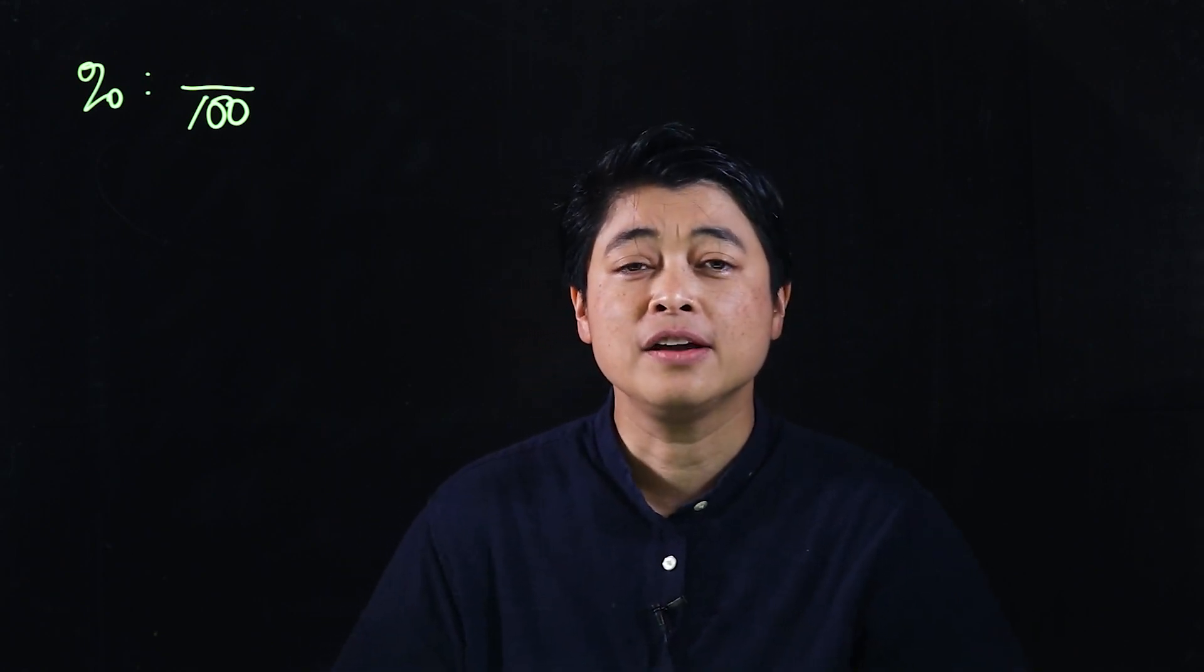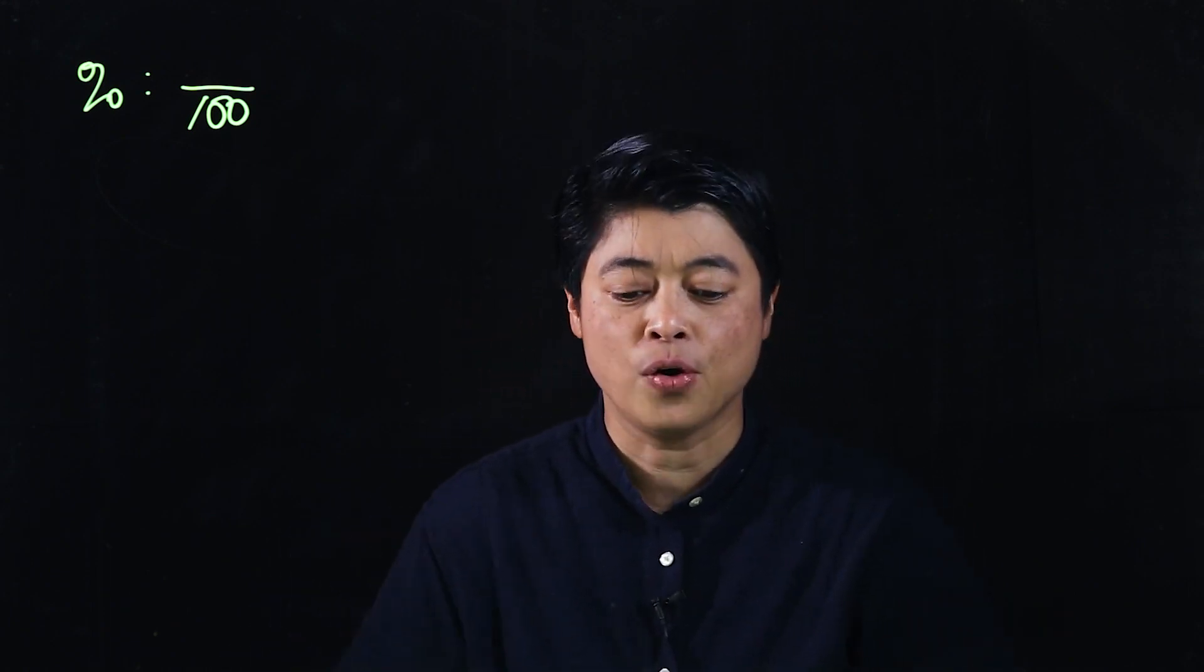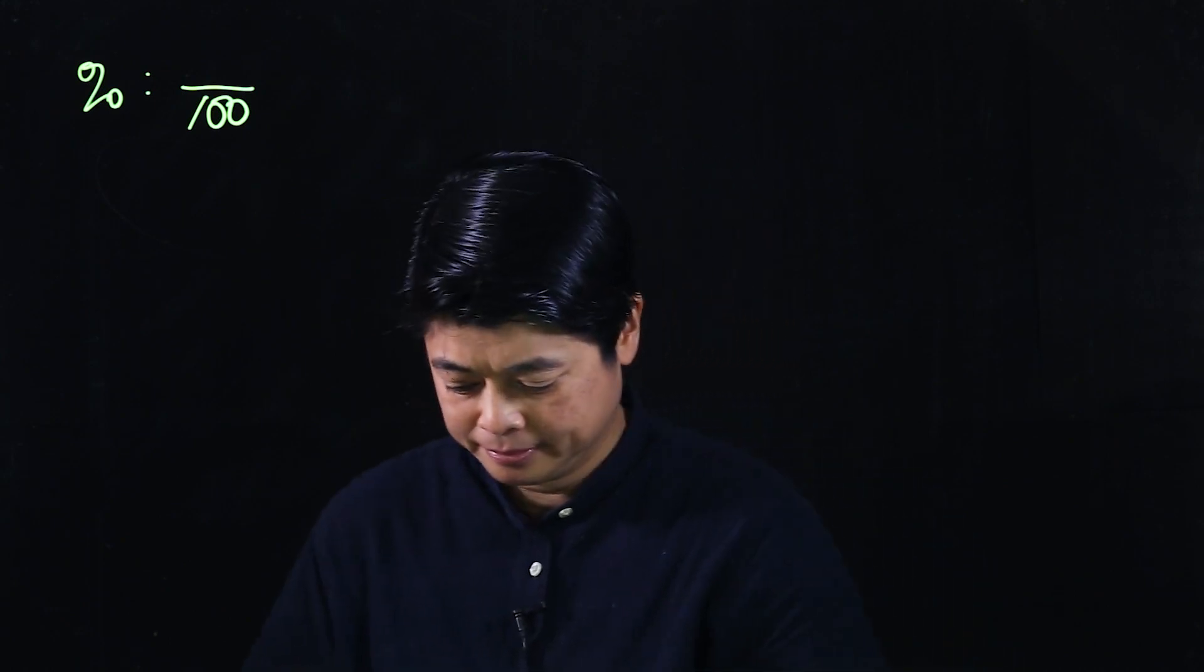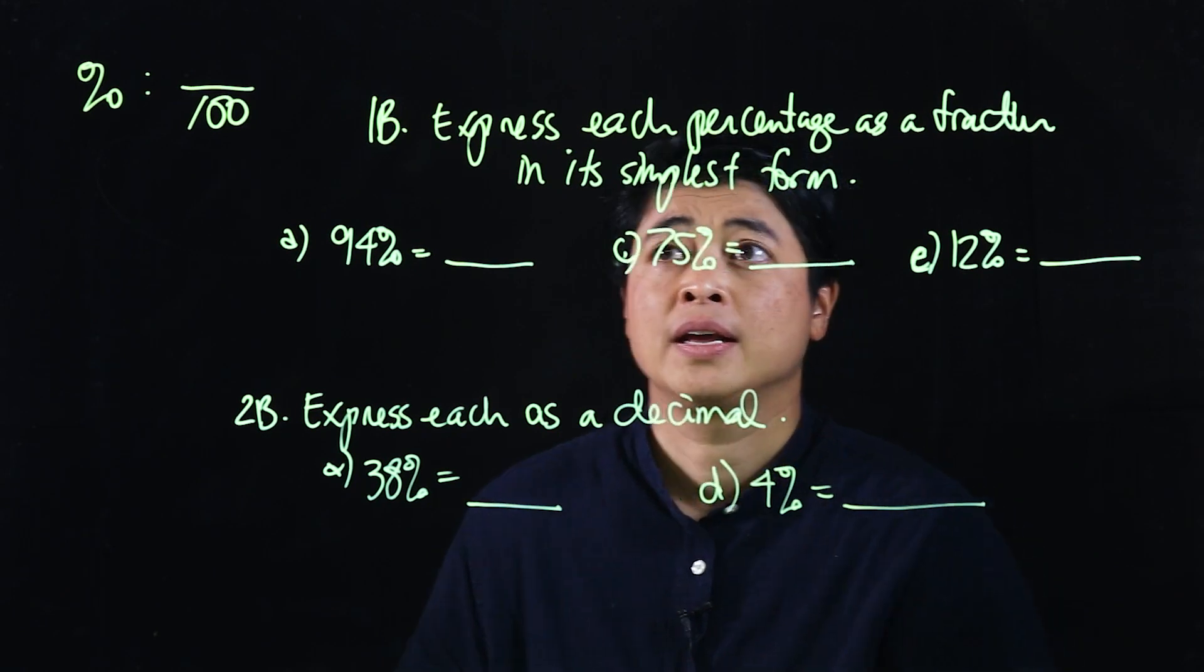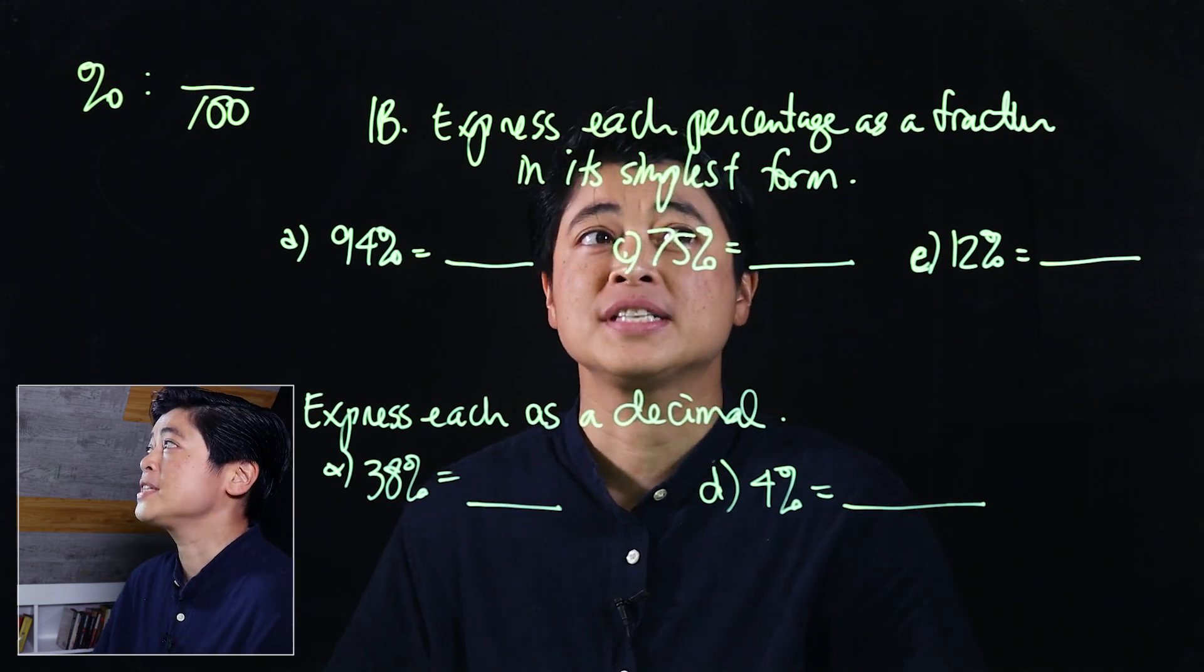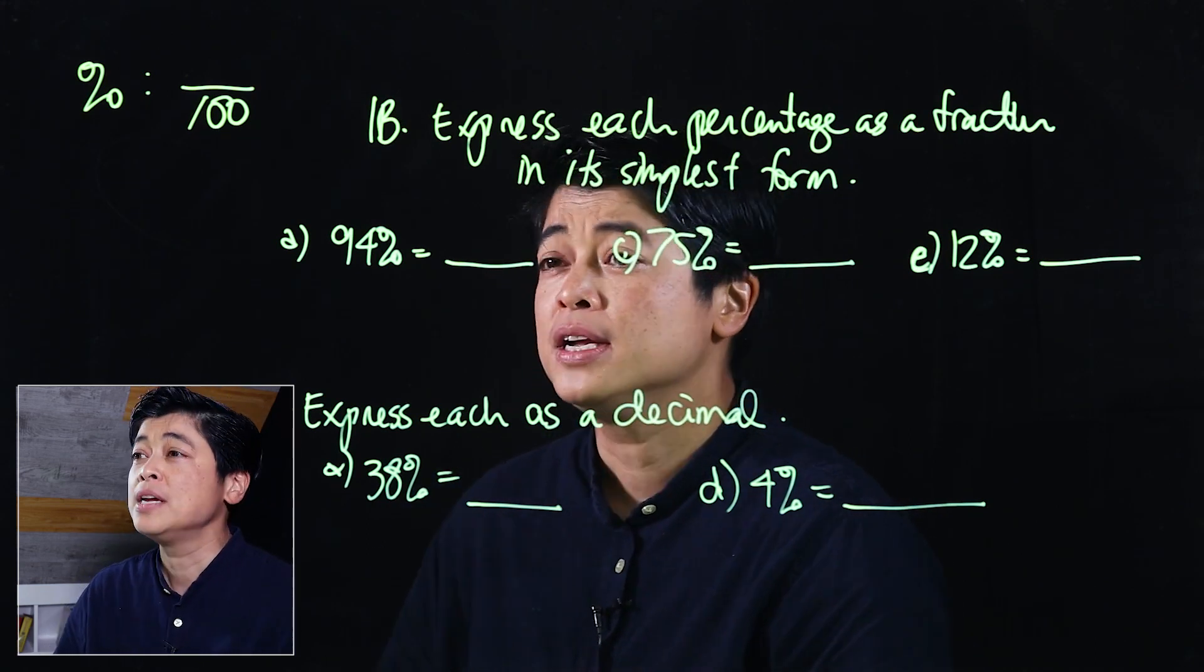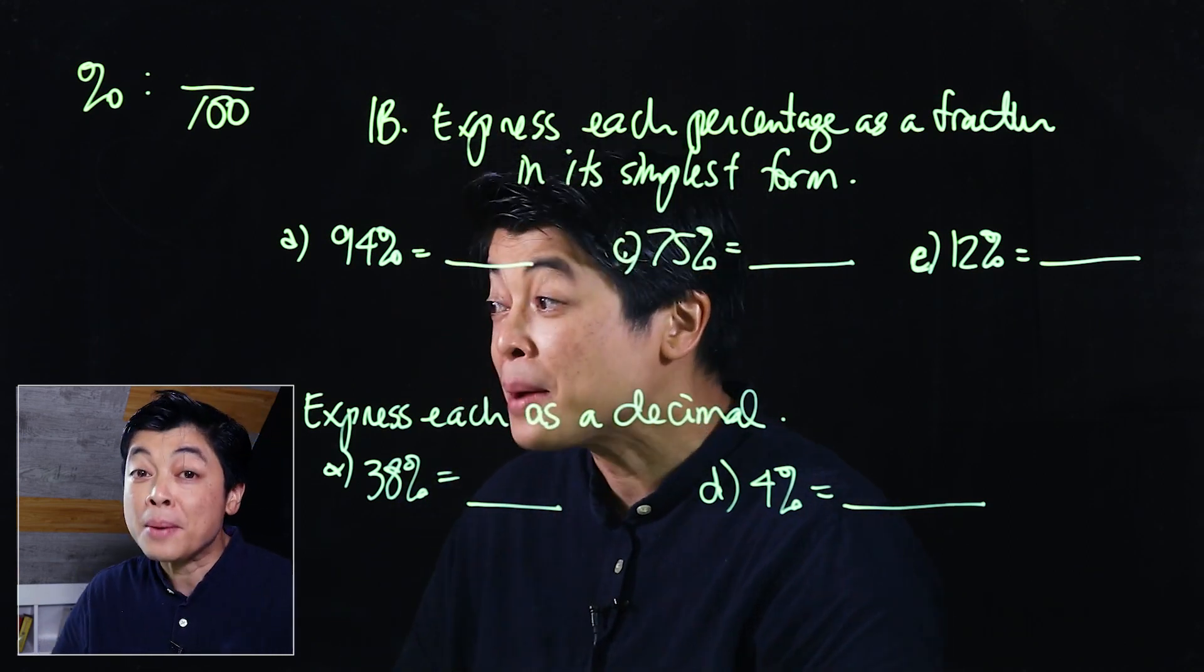If we look at pages 53 to 54, the first set of questions says express each percentage as a fraction in its simplest form. If we aren't reminded that it has to be in simplest form, we have to remember that it should be in its simplest form.